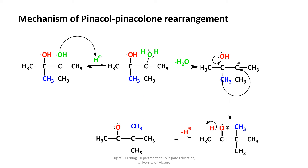Now let us learn about the mechanism of pinacol-pinacolone rearrangement. The first step involves, because the reaction is carried out in an acidic medium, the hydroxide group of the pinacol is protonated by the acid. In the second step, a water molecule is removed from the compound leaving behind a carbocation. This carbocation is tertiary and therefore it is stable.